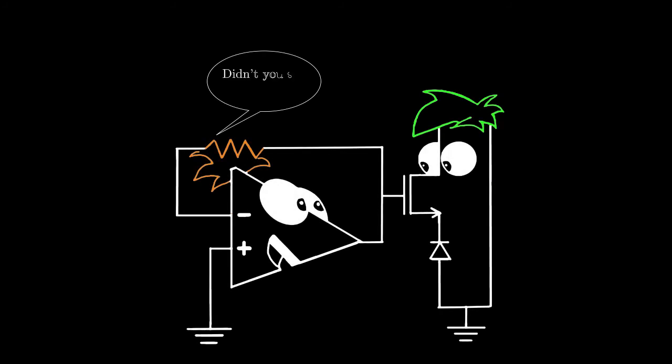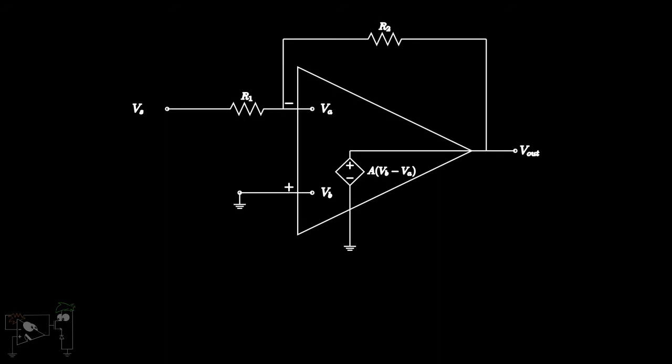Now, we turn our attention to a very important concept in the study of op-amps, the virtual ground concept. For that, consider the following circuit where an input Vs is applied to the inverting terminal A with negative feedback and the non-inverting terminal B is grounded.